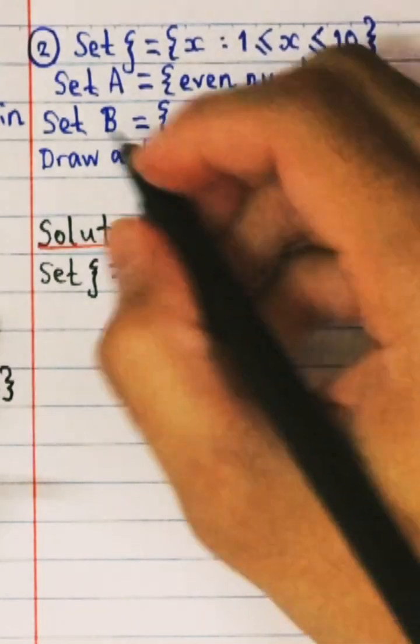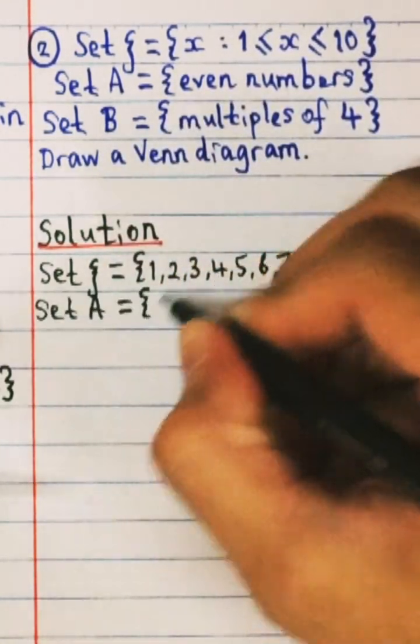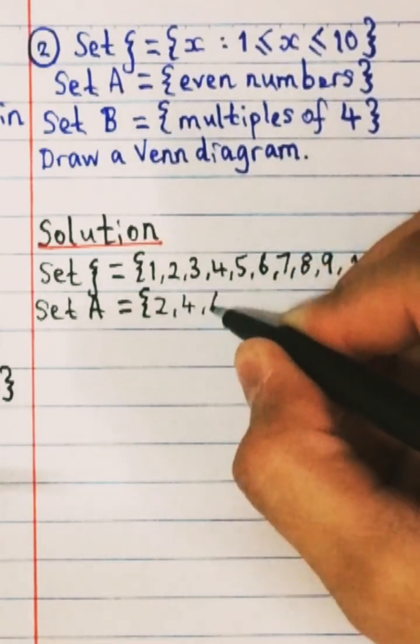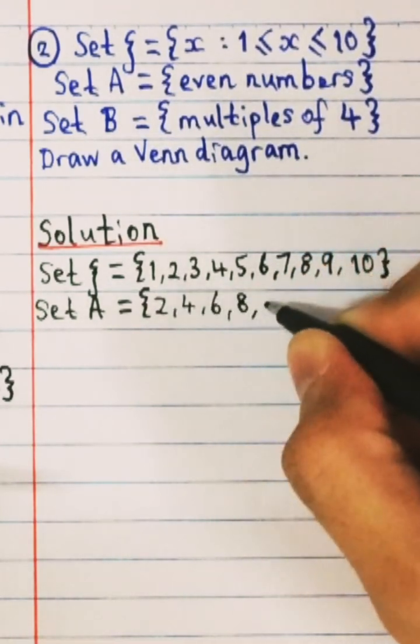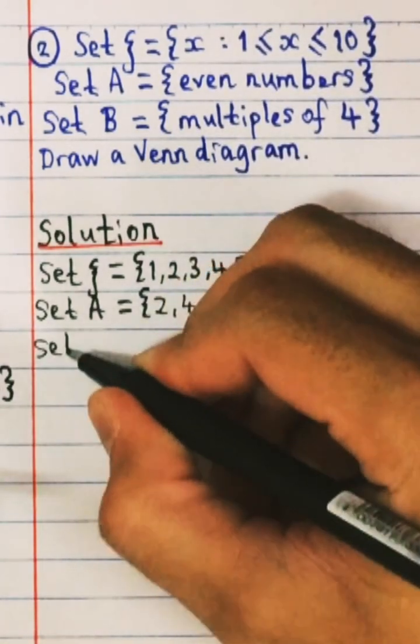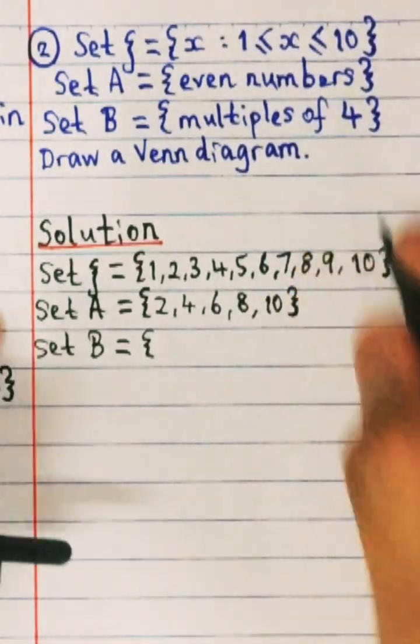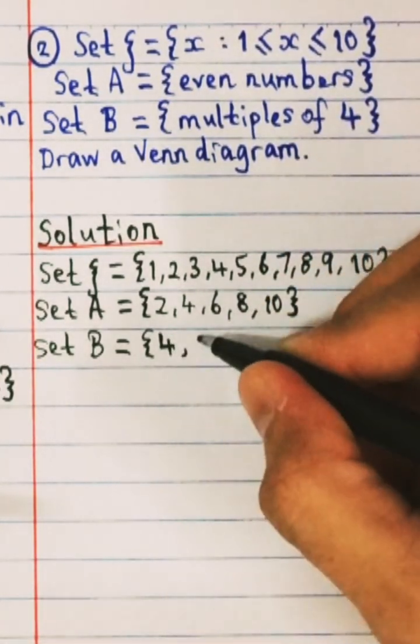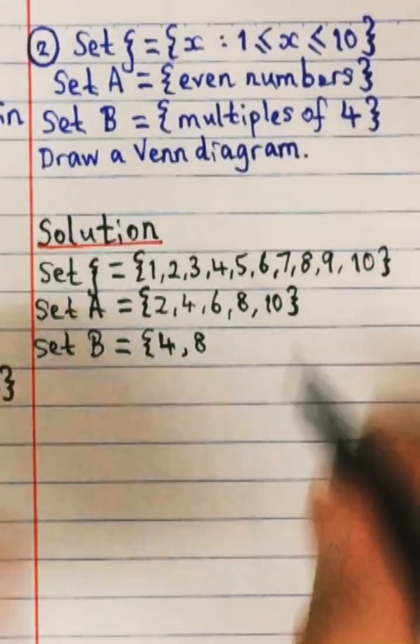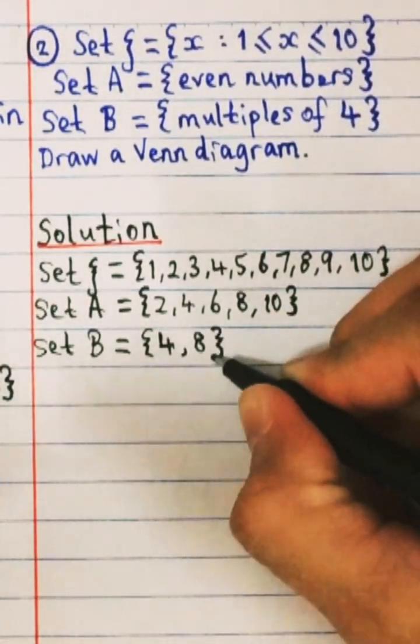Okay, this is your universal set. Okay, your set A will be even numbers. So from this list, what is your even number? You have 2, 4, 6, 8 and 10. So this is only even numbers. And then you have your set B equals to multiple of 4. So multiple of 4 will start with 4, and then 4 times 2 will give you 8. 4 times 2 will give you 12, but 12 is not in the list. So you're gonna close your braces.